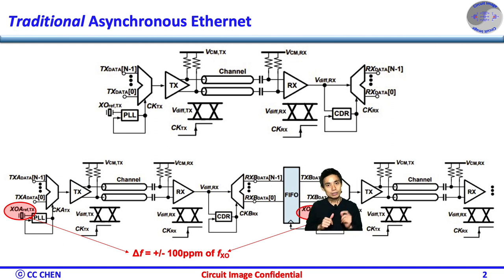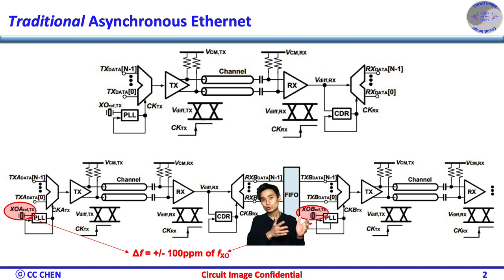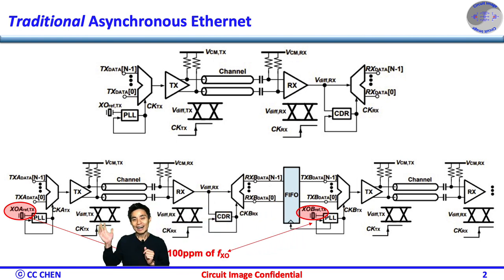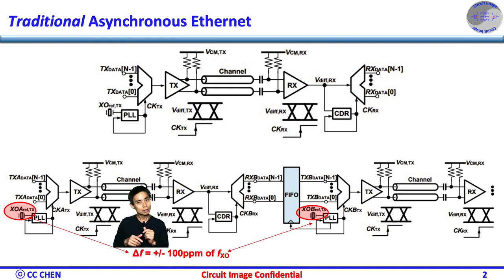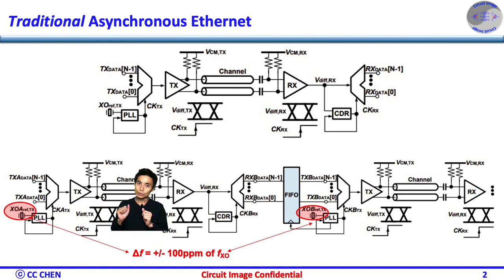The FIFO helps data transfer between two similar but asynchronous clock domains without big errors. Both TX and RX PLL filter the input jitter from the reference clock. So jitter is only added by the channel, either from bandwidth-limited ISI, distorted reflection, or crosstalk. And the jitter would never propagate more than one hub.